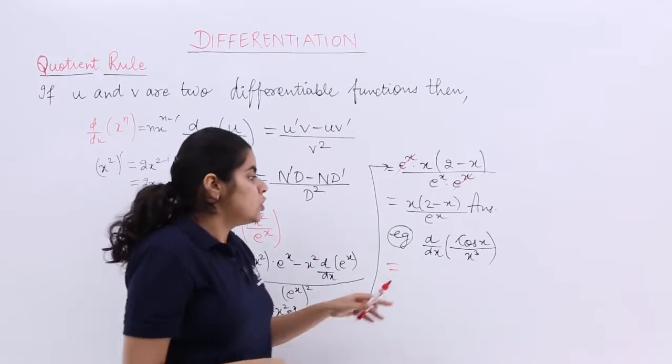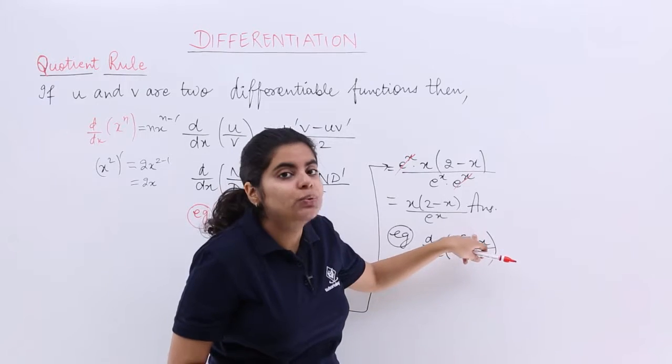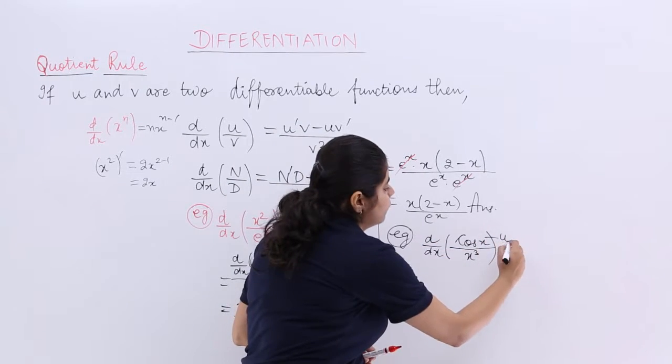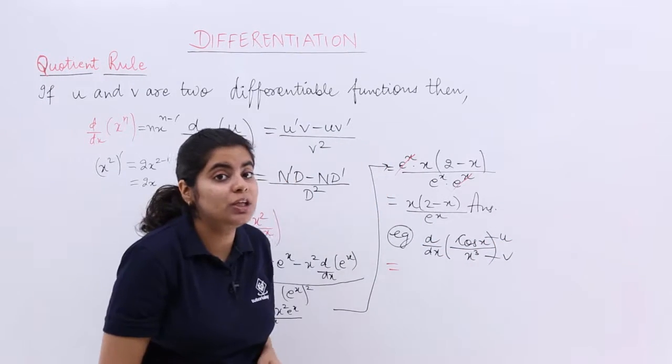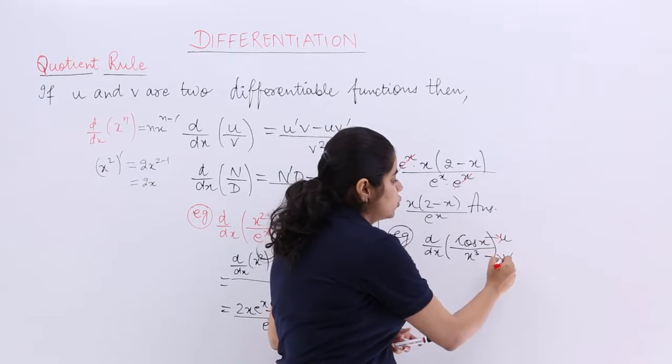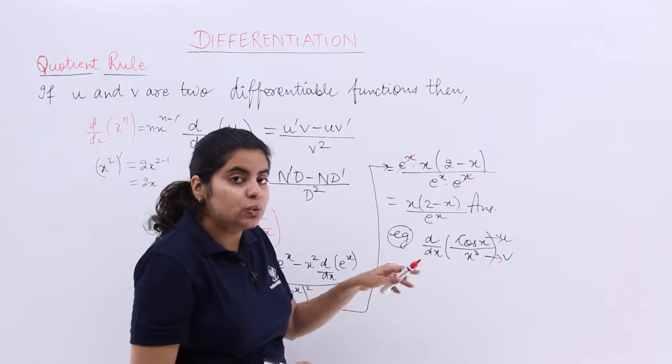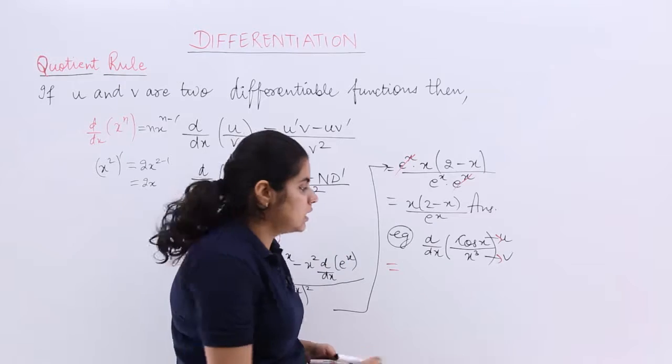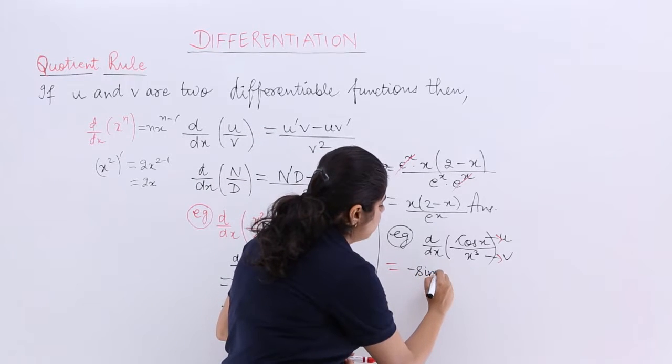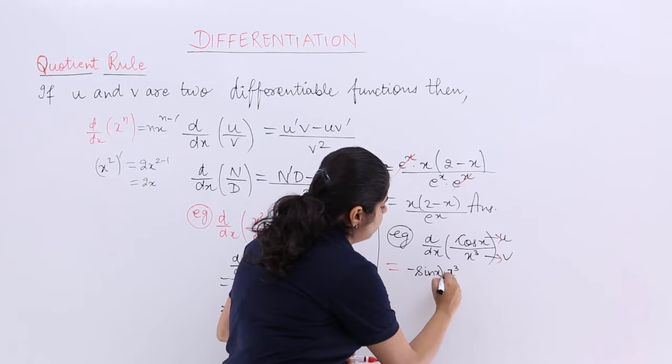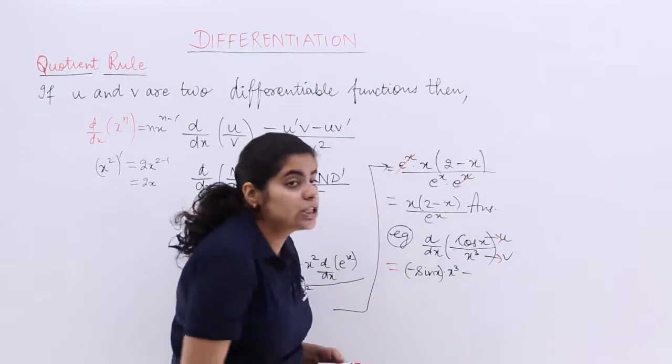Let's quickly solve it in two steps. So it is u dash v. U dash means if this is u, this is v. It has to be u dash v. That means u dash means numerator's differentiation. So it is minus sin x multiplied by v minus u v dash.